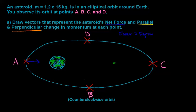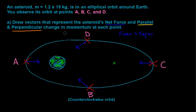So at all four of these points, we're just going to draw vectors that point from the asteroid over to the center of Earth. Now that we have these net force vectors drawn, we can focus on the parallel and perpendicular change in momentum vectors at each point.